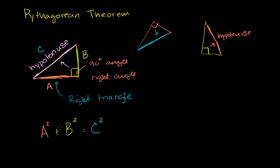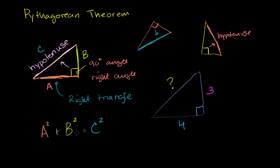Let's do that with an actual problem. Let's say I have a triangle that looks like this, and they tell us that this is the right angle, this length right here is 3, and this length right here is 4. We want to figure out that remaining length. The first thing you want to do before applying the Pythagorean Theorem is to make sure you have your hypotenuse straight — make sure you know what you're solving for. In this case, we're solving for the hypotenuse, because it is the side opposite the right angle.